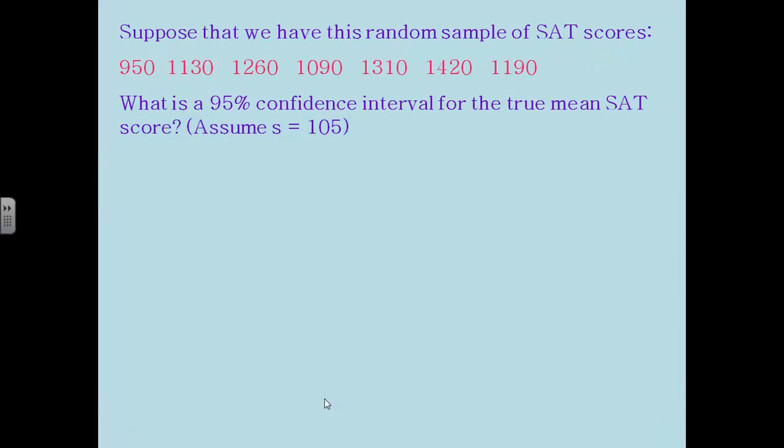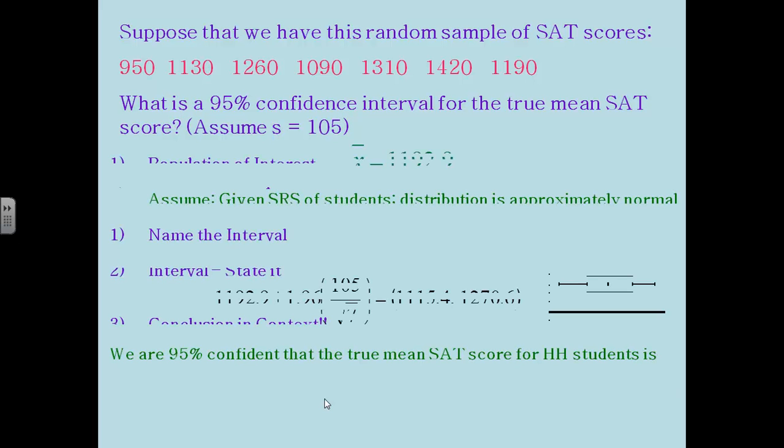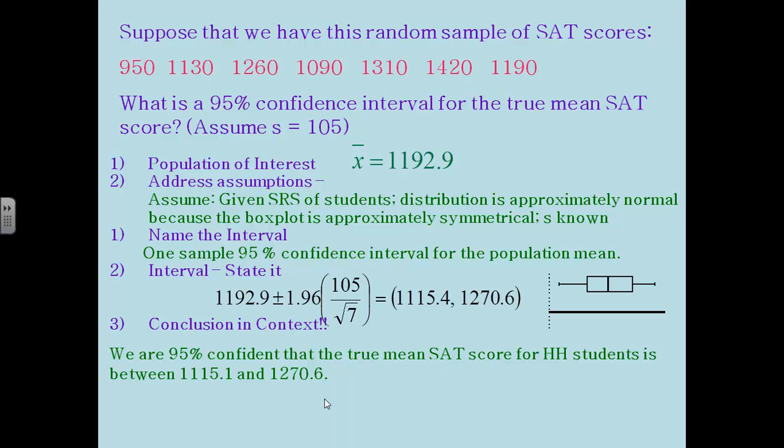All right, and here's one more example. This time suppose we have this random sample of SAT scores. So we have seven scores there and we want to calculate the 95 percent confidence interval for the true mean. Again assume that s is 105. The first thing we'd have to do in this case is we'd have to actually add up these seven scores and divide by seven to get our x bar. So our x bar is 1192.9.